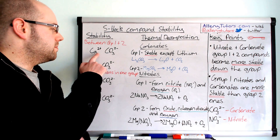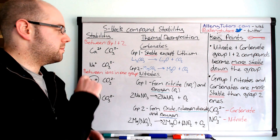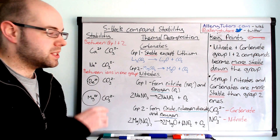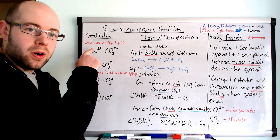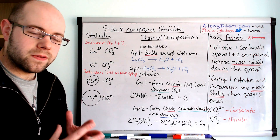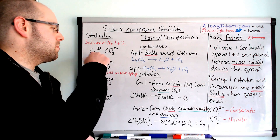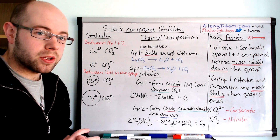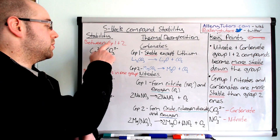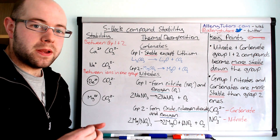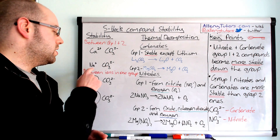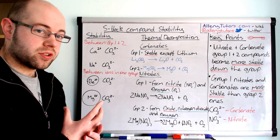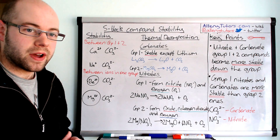The bigger the charge on the cation, the more distorted the electrons are going to be in the molecule. We can see here that calcium is 2+ and carbonate is 2-. Calcium has a bigger charge than Na+, so this one is going to be distorted more, and the more distortion you have in the molecule, the more unstable it is. So calcium carbonate would be more unstable because of the greater distortion than sodium carbonate — it's all to do with the distortion of electrons and the charge on the positive ion.